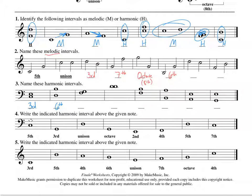This next one is not so common, but it does happen. They're stacked on top of each other. Between F and G there's only one difference there, so we call that a second. You can also think of it as a second scale degree if it were a scale.